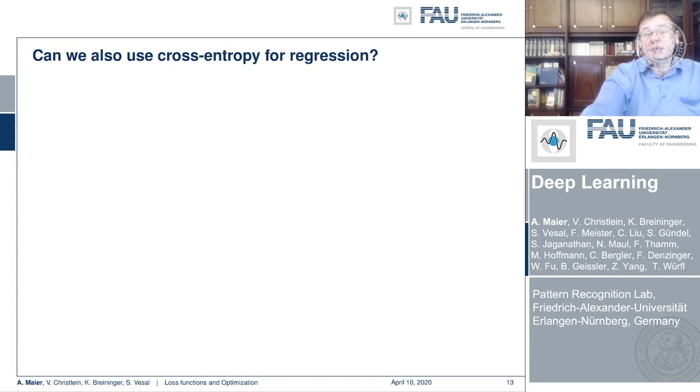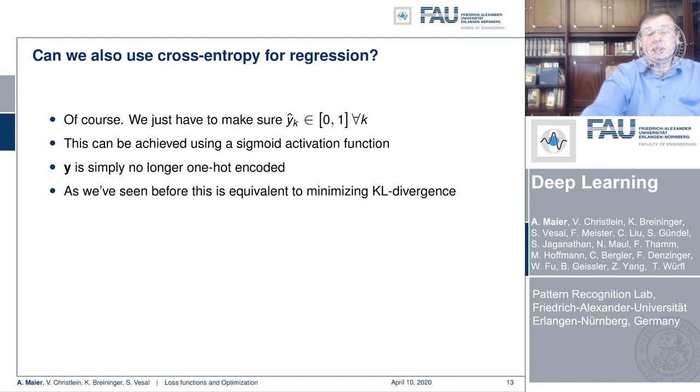Now, can we use cross-entropy for regression? Well yes, we can do that of course, but you have to make sure that your predictions are going to be in the domain of [0,1] for all of your classes. You can, for example, do this with a sigmoid activation function. Then you have to be careful because in regression typically you're no longer one-hot encoded, so this is something that you have to deal with. And what we've seen before, this is equivalent to minimizing the KL divergence.